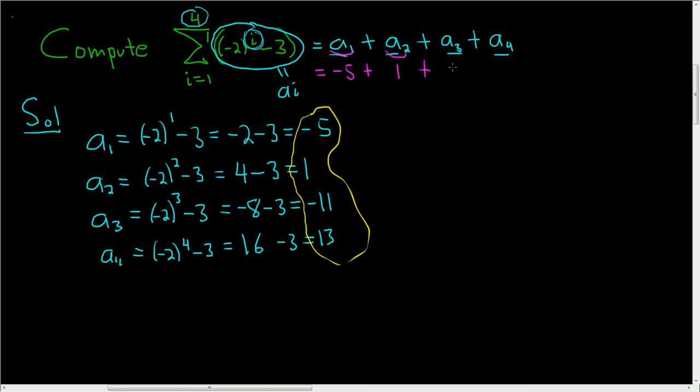plus a sub 3, which is negative 11, plus a sub 4, which is 13. And if you add all these numbers up, let's see, negative 5 plus 1 is negative 4, and negative 11 plus 13 is positive 2, so we end up with negative 2. And that's it. I hope this helps someone out there.